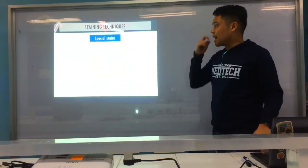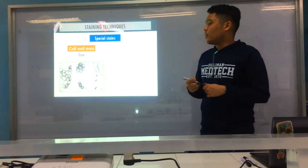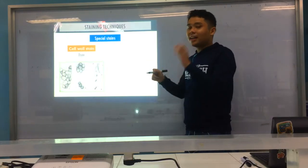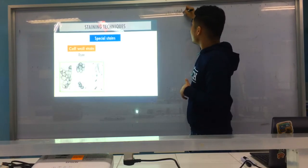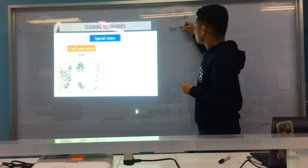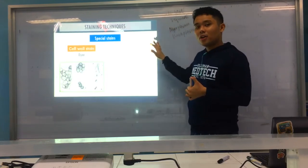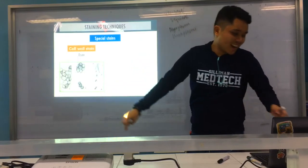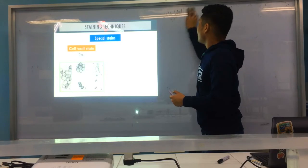Now different examples of special stains. You have cell wall stain — the dire stain. As a review, most bacteria have cell walls, but there are cell wall-deficient organisms — those are mycoplasma and ureaplasma. Since they have no cell wall, the dire stain won't work on them.